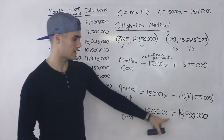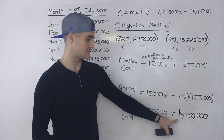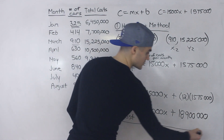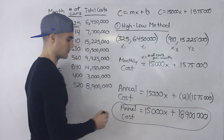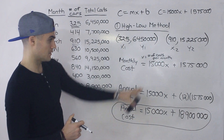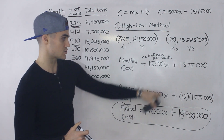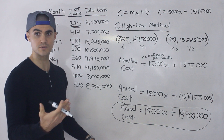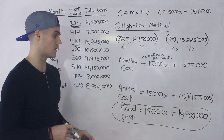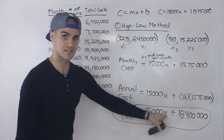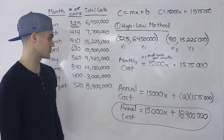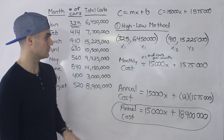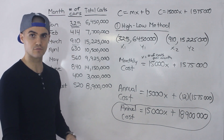When you multiply 1,575,000 by 12, you get 18,900,000. So the annual cost equation is c equals 15,000x plus 18,900,000. Students sometimes get confused about why the variable cost doesn't change but the fixed cost does — it's because the variable cost per unit is always the same regardless of time period; it's just what that x value represents that changes. That's how you convert from monthly to annual, and that's the high-low method.